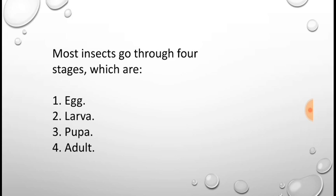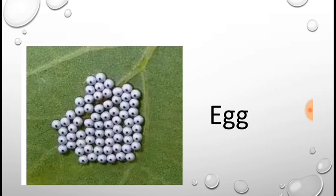Now let's see the stages of an insect. Most insects go through four stages, which are: one, egg; two, larva; three, pupa; four, adult. Most insects go through four stages which are egg, larva, pupa, and adult.